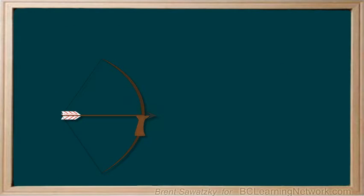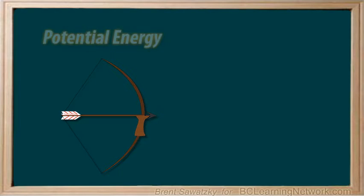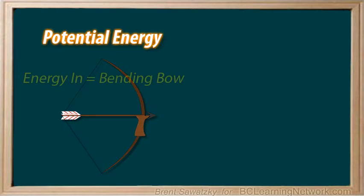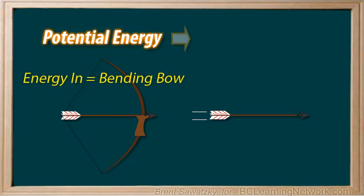How about a bow and arrow? A bow and arrow converts potential energy — that is the spring energy in the bow. Consider that the position of the arrow in the bow lends itself to having a bunch of stored energy. And when you release the arrow, that potential energy is quickly converted into kinetic energy.